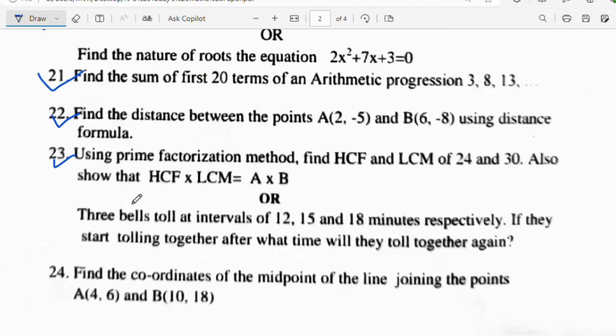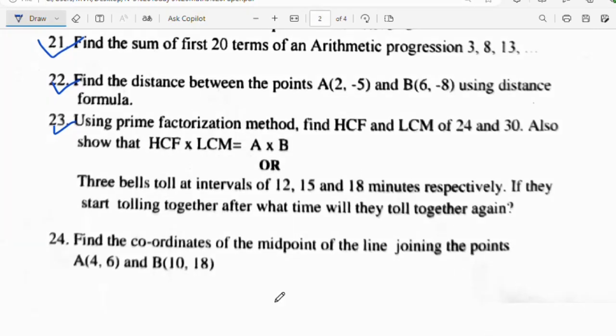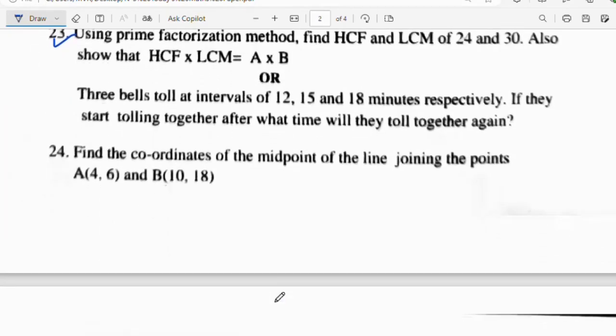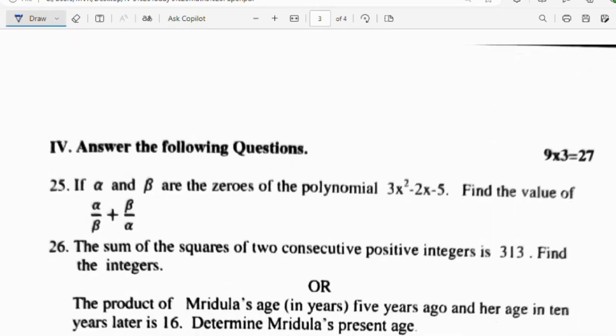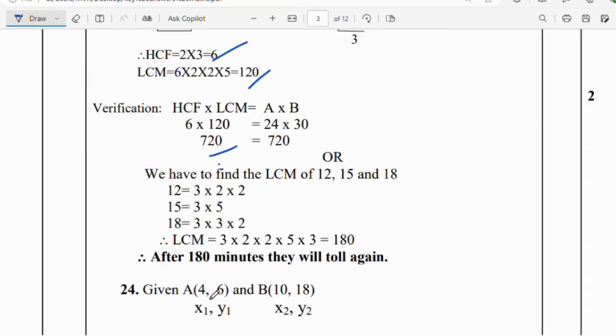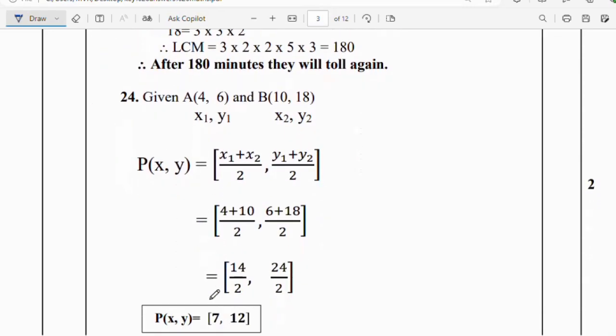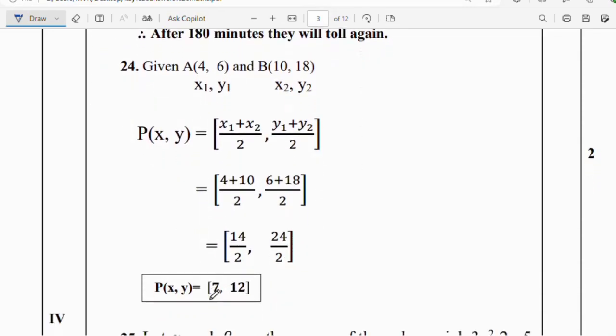Question number 24: Find the coordinates of the midpoint of the line joining the points A(4, 6) and B(10, 18). Given x₁, y₁ and x₂, y₂. They asked midpoint. Midpoint formula P(x, y) = ((x₁ + x₂)/2, (y₁ + y₂)/2). Substitute the value: (4 + 10)/2, (6 + 18)/2. We will get 7 comma 12.